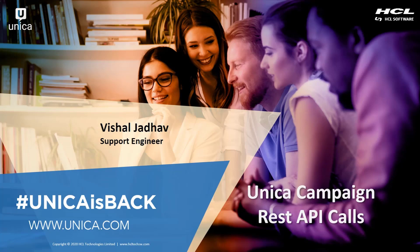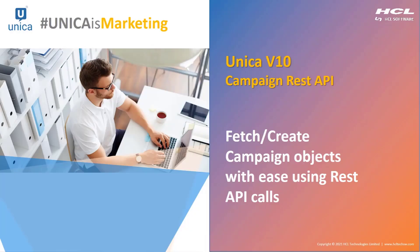Today we will talk about the REST APIs in Unica Campaign. REST APIs are mainly used to perform CRUD operations — that is, create, update, read, and delete campaign objects. Campaign objects are nothing but offers, campaigns, flowcharts, etc. REST APIs were introduced in Unica in version 9.1.2 with version v1. The next version v2 was introduced in 10.4. Now in 12.4, we have version v3 which also has Swagger documentation.